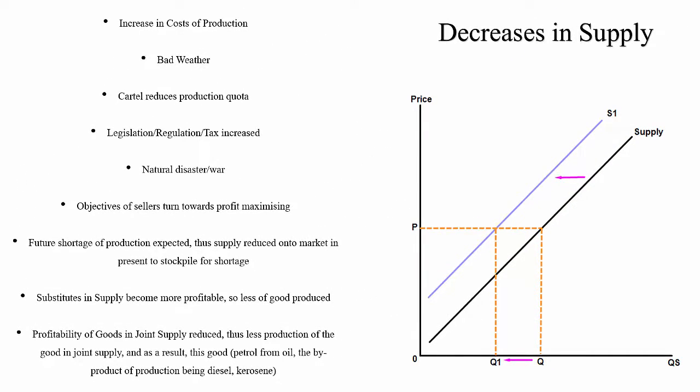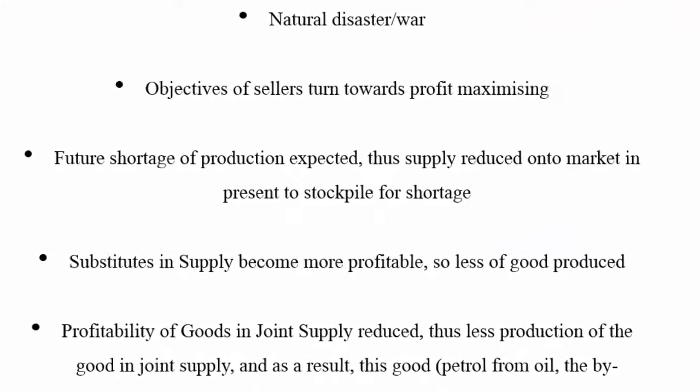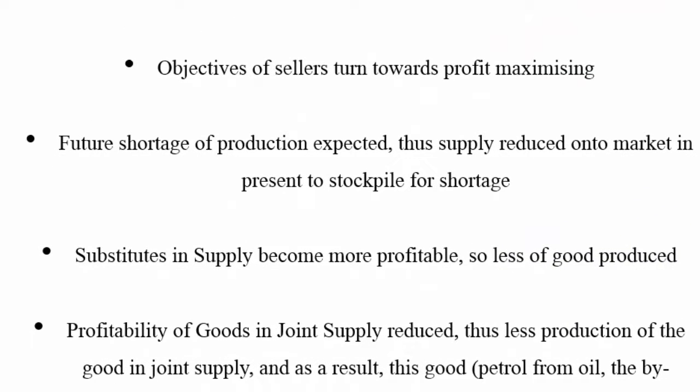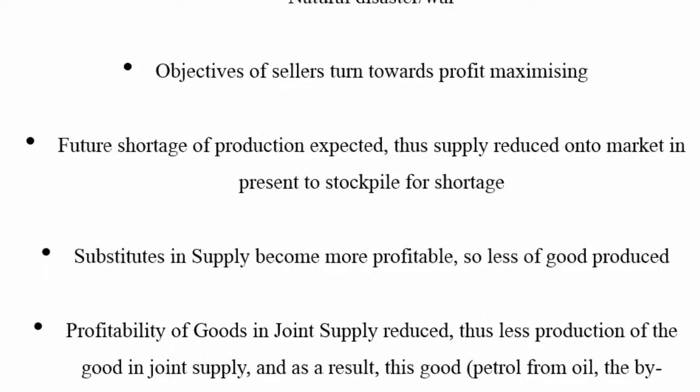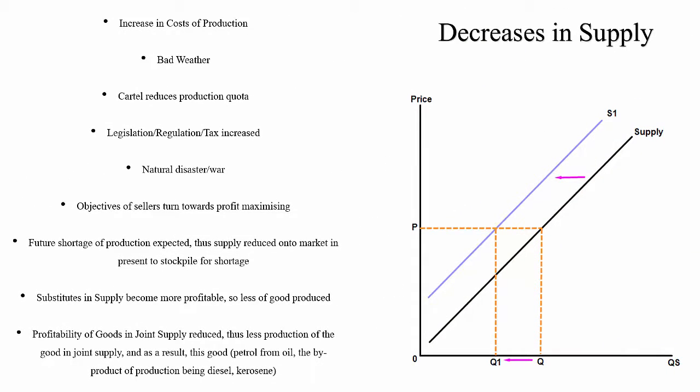Let's take another example. If we expect there to be a future shortage of production, then the current supply into a market will be reduced in order to stockpile the product now in case of a future shortage. Supply in the present period will shift to the left and decrease because of the need to stockpile.